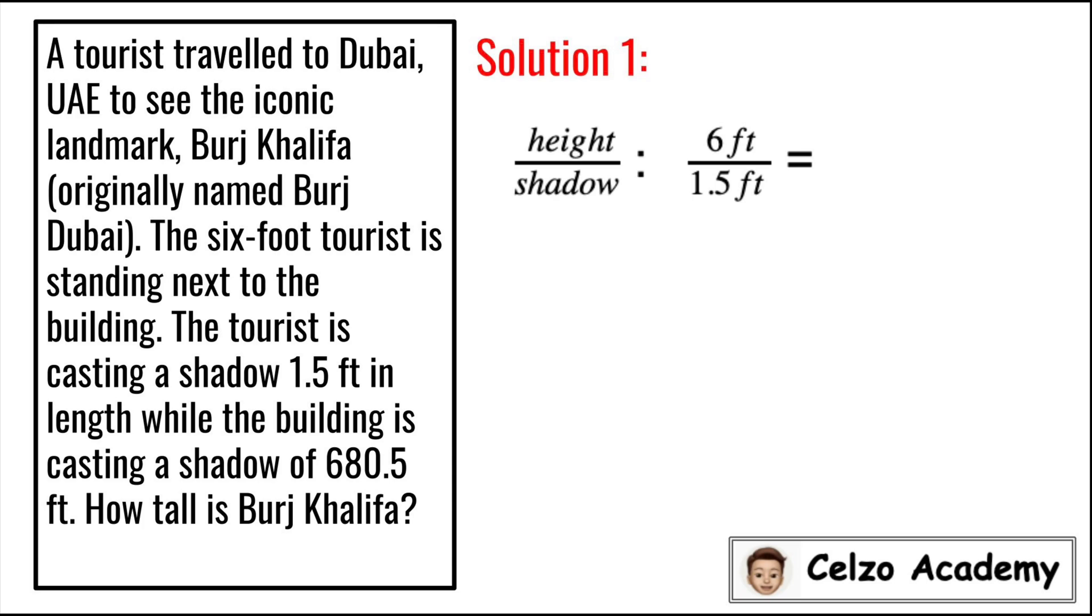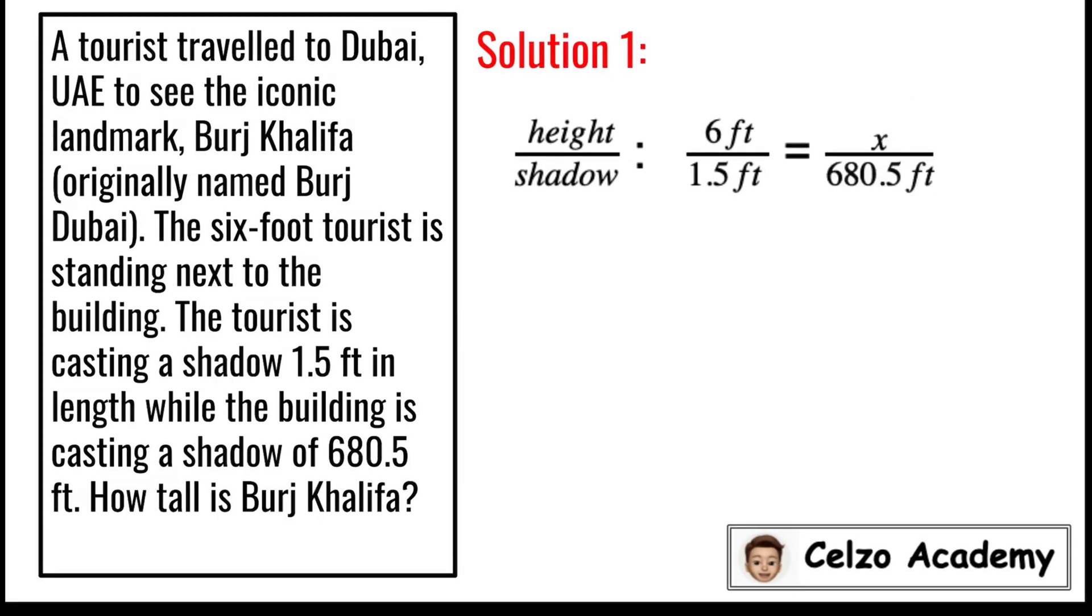On the other hand, the building is casting a shadow of 680.5 feet, which is our denominator. And we're solving for the height, so x is missing. So the equation that we have is 6 feet over 1.5 feet is equal to x over 680.5.